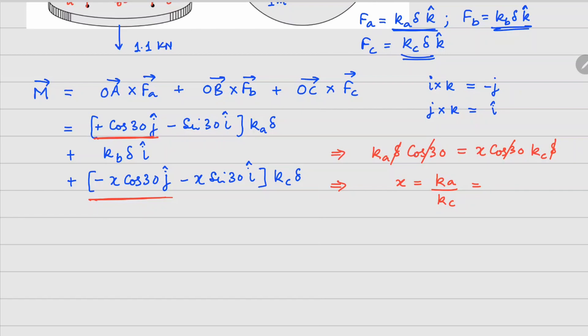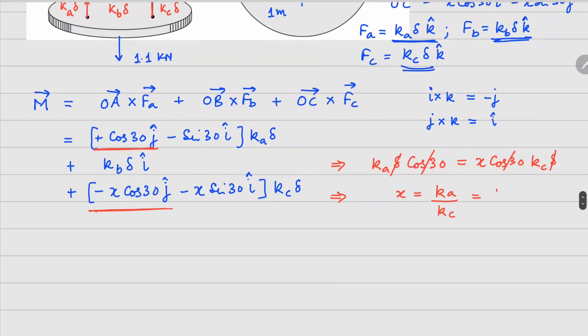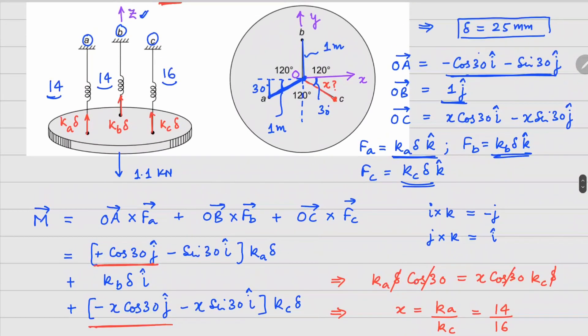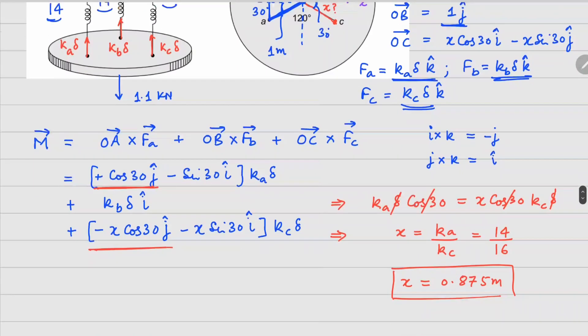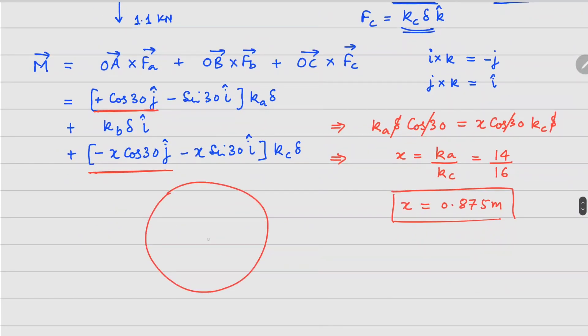ka was given as 14, this is 14 divided by 16, so that gives us x value equals to 0.875 meters. So one of these springs is going to be slightly closer to the center. So if this is the circuit we have, this is one meter, this is one meter, and the third one is going to be somewhere here. So this is your A, this is B, and this one is C.